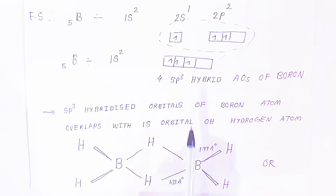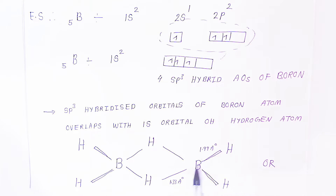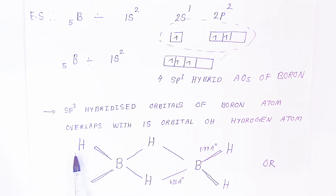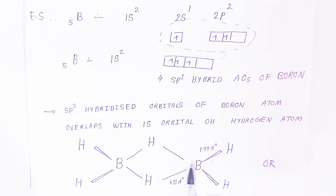The sp³ hybridized orbitals of boron overlap with the 1s orbital of hydrogen atoms. Each boron has four sp³ hybrid orbitals. Out of six hydrogens, two are terminal on each boron and one acts as a bridging hydrogen. The bond length between boron and terminal hydrogen is 1.19 Å, while the boron-hydrogen bond in bridge form is 1.33 Å. This difference in bond length identifies which hydrogen is the bridging (banana bond) hydrogen.